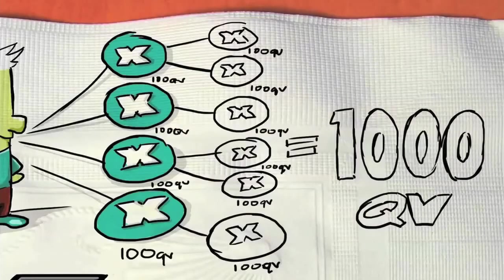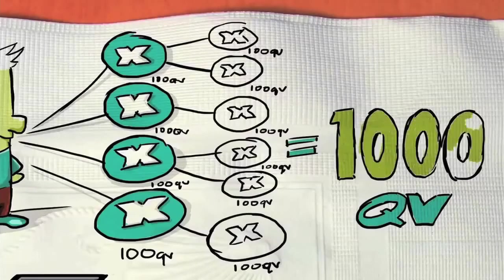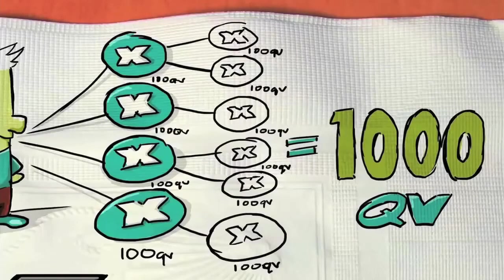But remember, only up to 100 QV per person will be counted towards your X-Drive qualification. That's an X-Drive. Learn it well and become a master of duplication.